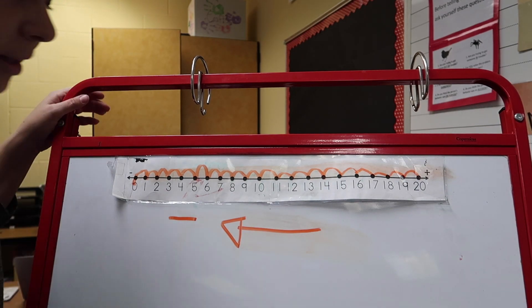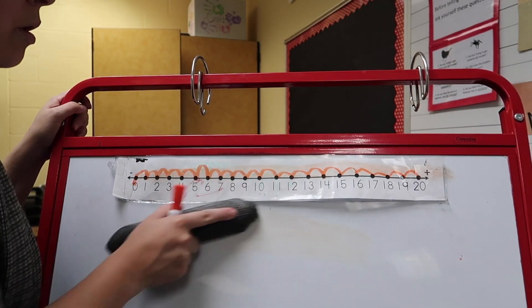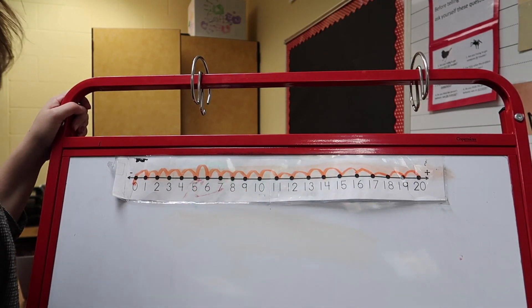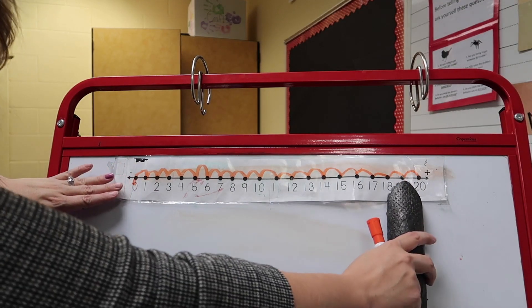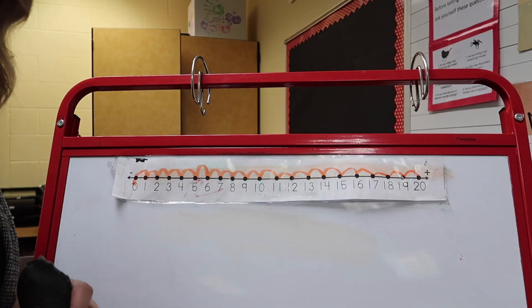So a number line is a really, really good tool for you to use when you're doing adding and subtracting which we're going to do a lot of this year. So I just wanted to show you this is a number line. So if I say use your number line, this is what I mean. Okay?